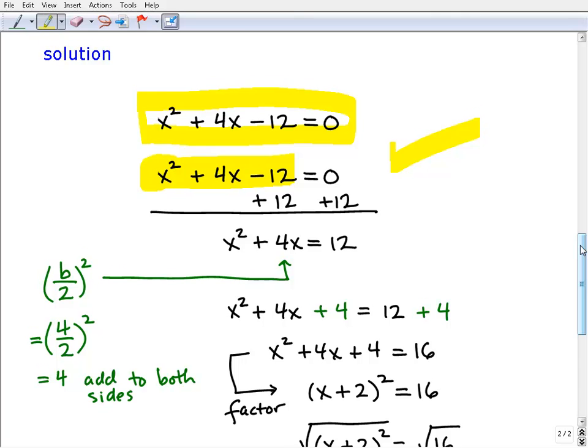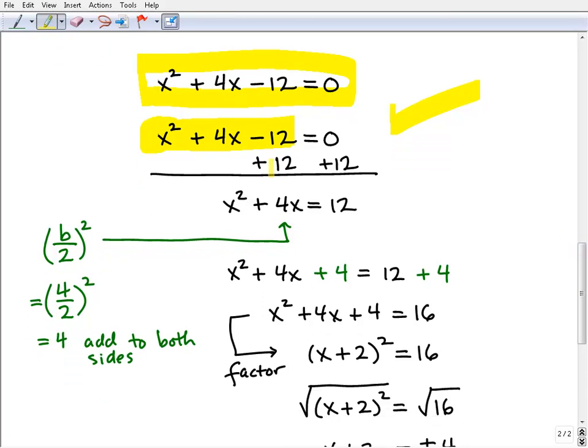Now, the next thing you want to do is get the number term, the constant, to the right-hand side of the equation. And that's what we're doing here. So I have x squared plus 4x minus 12 equals 0. I'm going to add 12 to both sides such that I have an x squared and an x term on the left-hand side and my number on the right-hand side. So that's kind of like your first initial steps when we're completing the square.